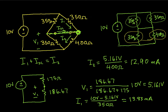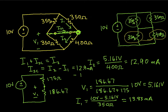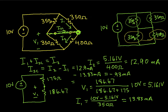From this, we can compute the short circuit current. ISC is going to be I2 minus I1, which gives 12.9 milliamps minus 13.83 milliamps, which works out to minus 0.93 milliamps. So that gives us the short circuit current.